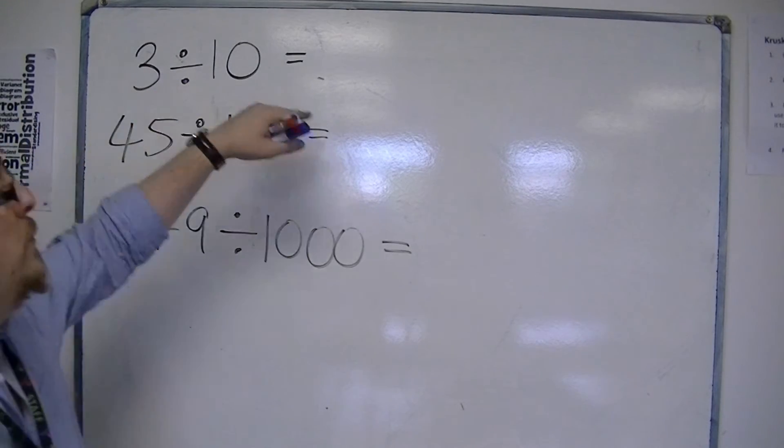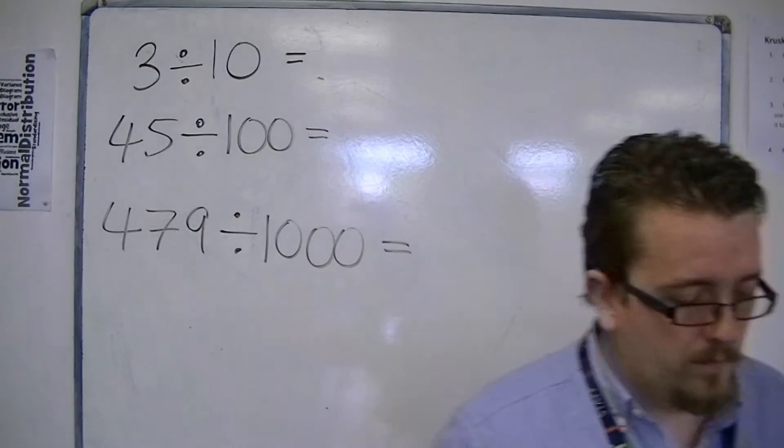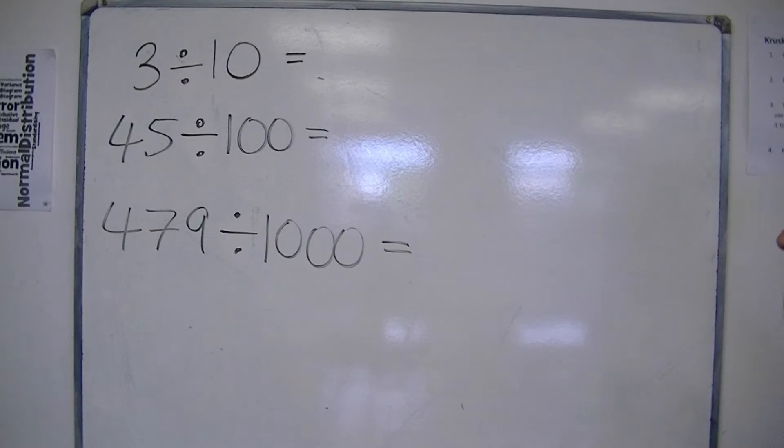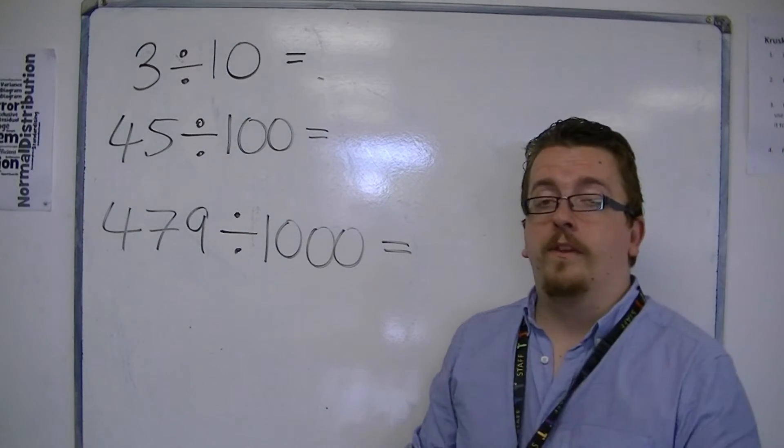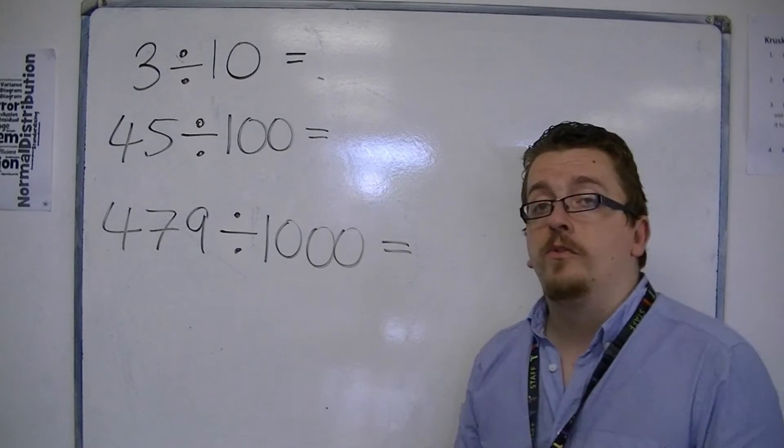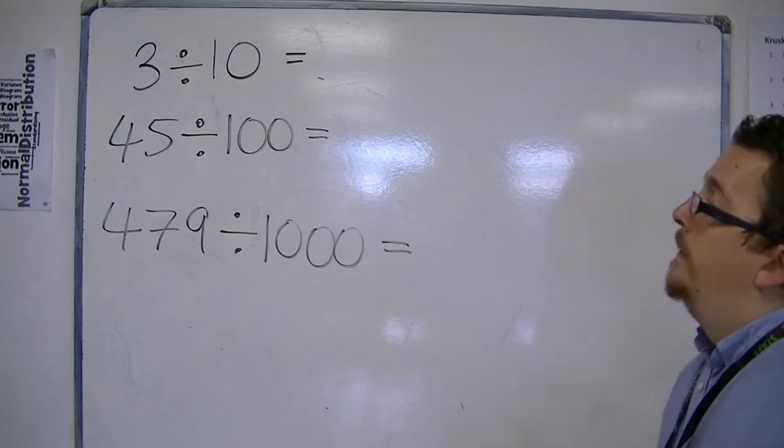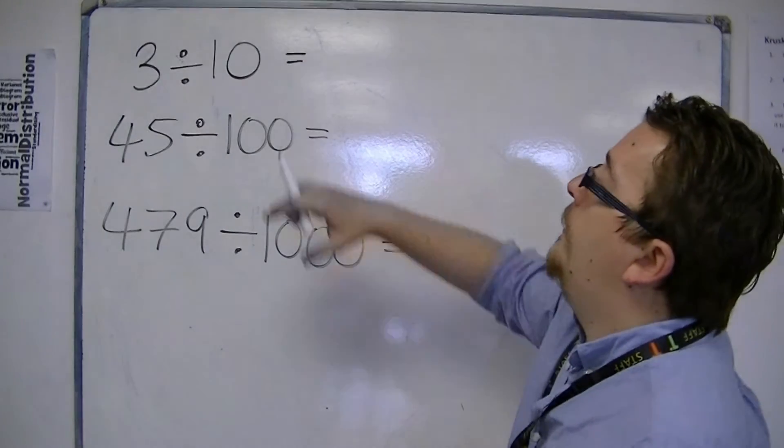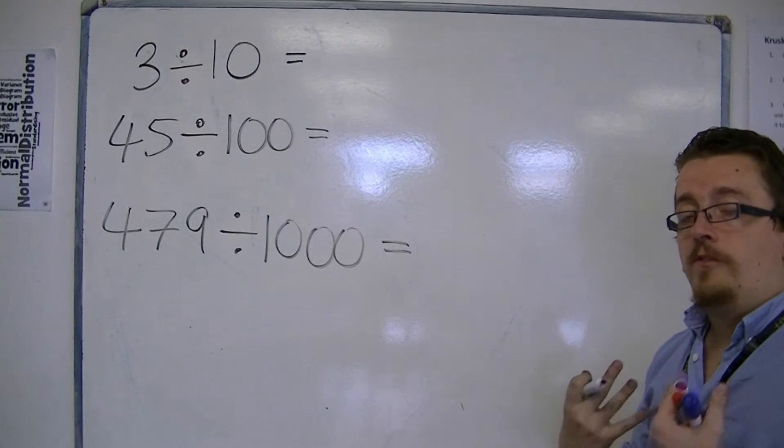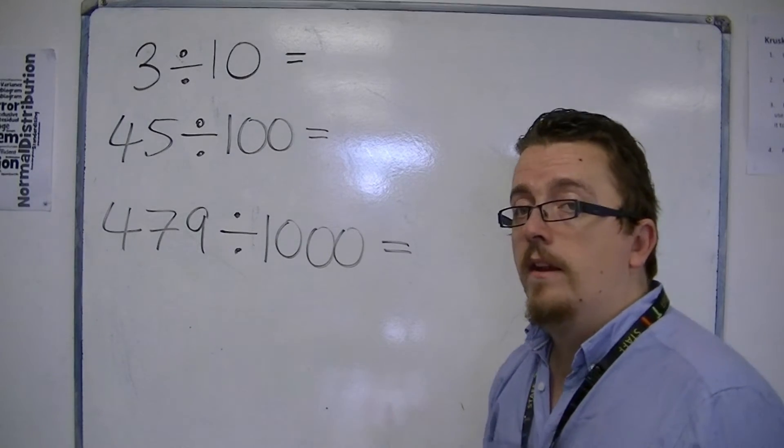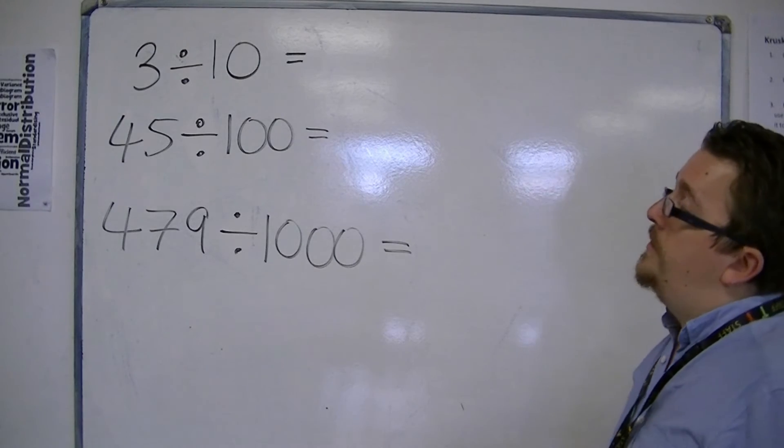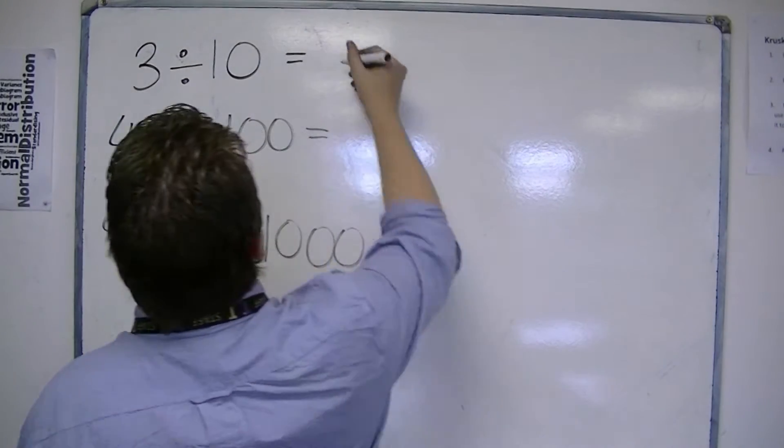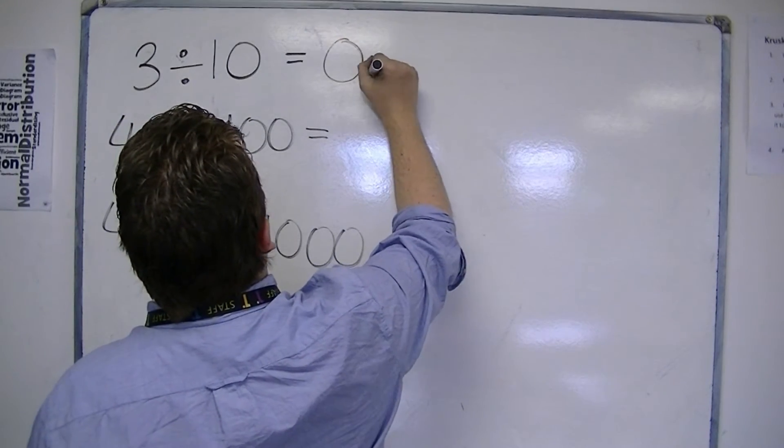Then we have 3 divided by 10. Now, we haven't gone on to division methods, so I'm not expecting us to use any kind of division method here. What I'm saying is that really, when we're thinking about dividing by powers of 10, it's all about moving the decimal point. 3 divided by 10 is 0.3.